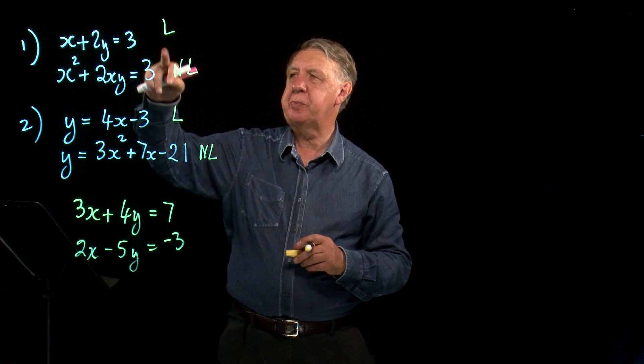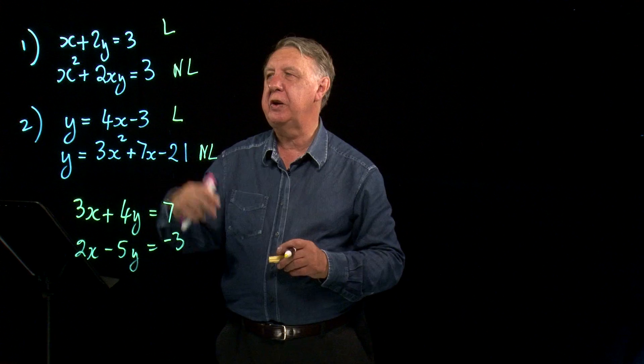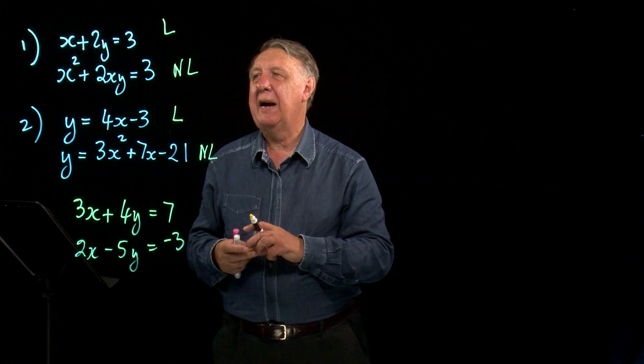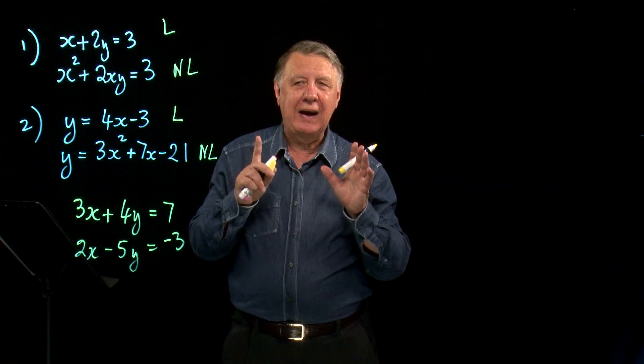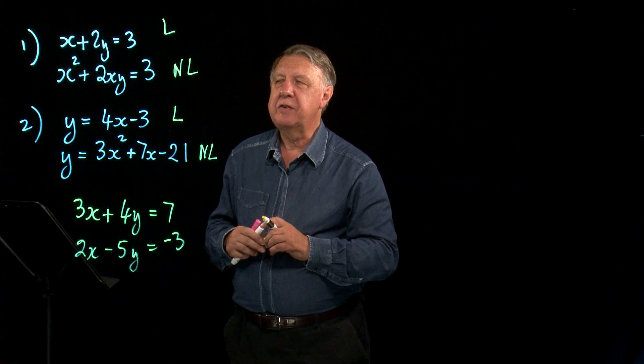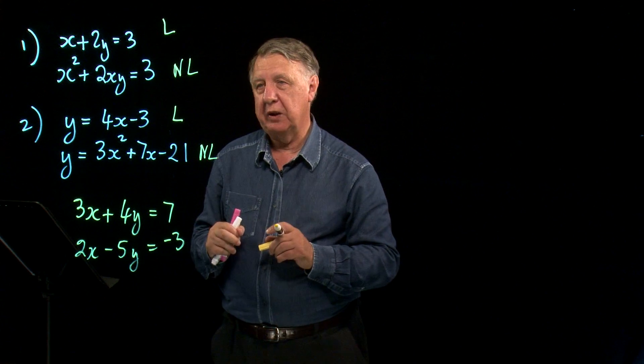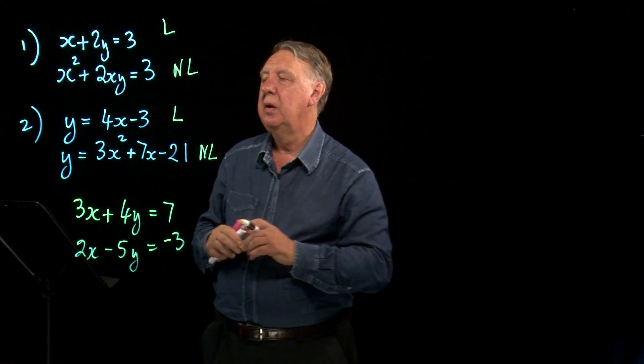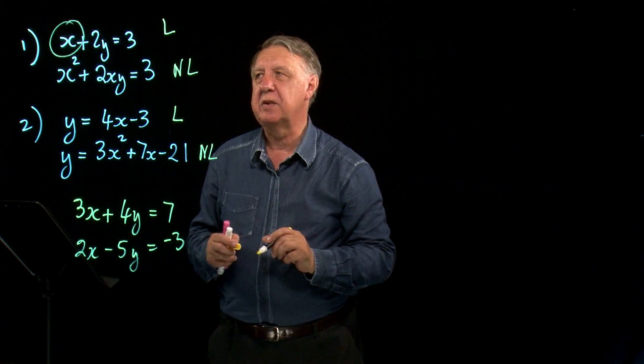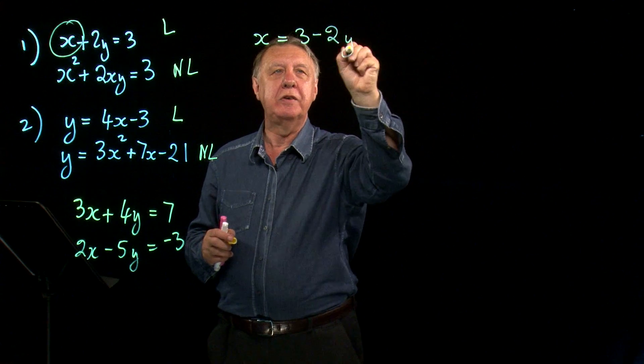So looking at the first pair here, we go to our linear equation and we rearrange it to make either x the subject or y the subject, and there's no absolutely firm rule on this. People have their own ways of doing this. I'm going to use the philosophy of making the simplest one the subject. That isn't always the best case. So here clearly x is going to be the simplest one to make the subject. So we rearrange that: x equals three minus two y.